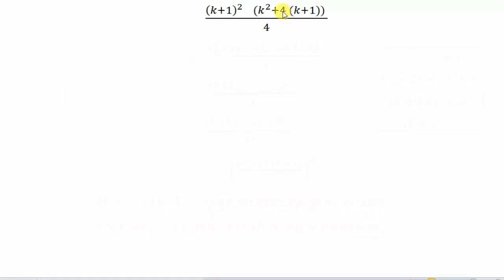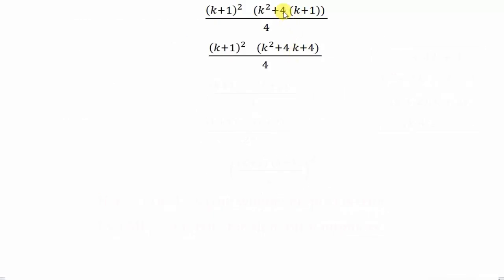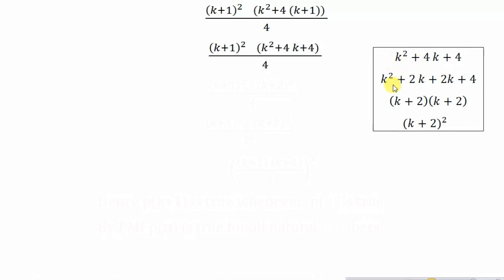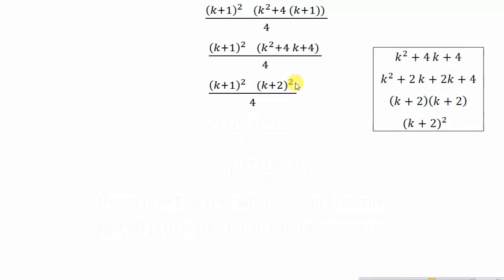Multiplying out: 4 times k is 4k, and 4 times 1 is 4, giving k² + 4k + 4. We can factor this expression: writing 4k as 2k + 2k and 4 as 4, we get factors (k+2)(k+2), which is (k+2)². So instead of k² + 4k + 4, we write the factor (k+2)².